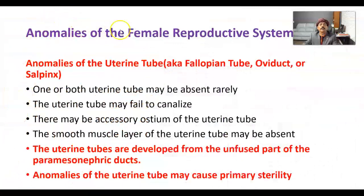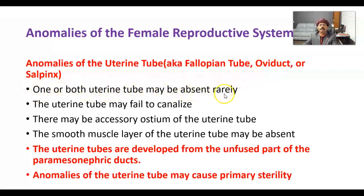Anomalies of the female reproductive system: anomalies of the uterine tube. The uterine tube is also called the fallopian tube, oviduct, or salpinx. One or both uterine tubes may be absent, rarely. The uterine tube may fail to canalize. There may be an accessory ostium of the uterine tube — ostium means opening.